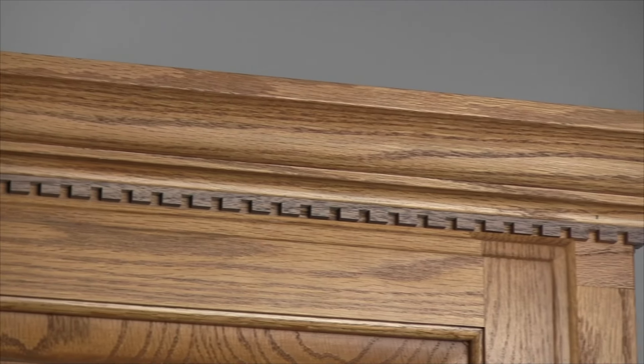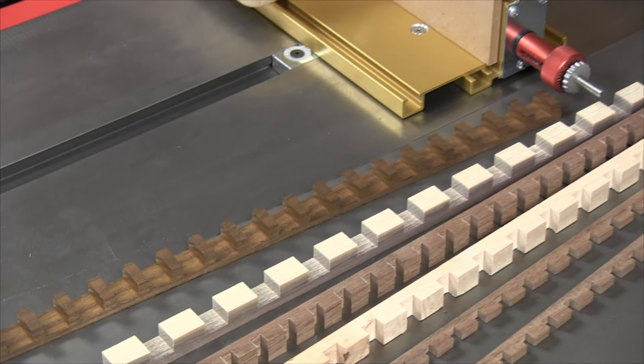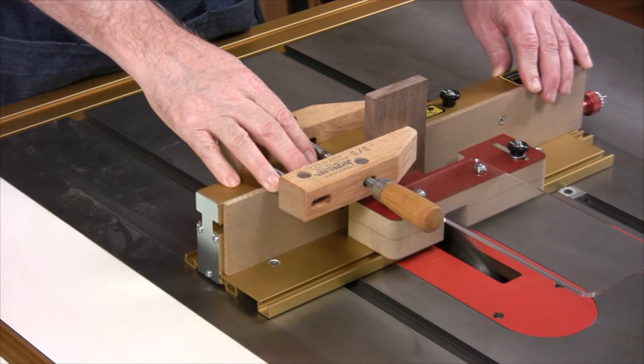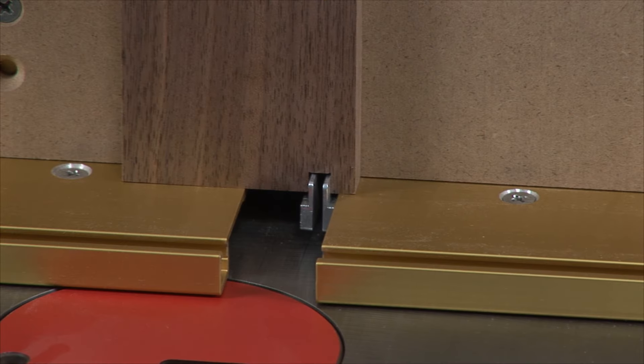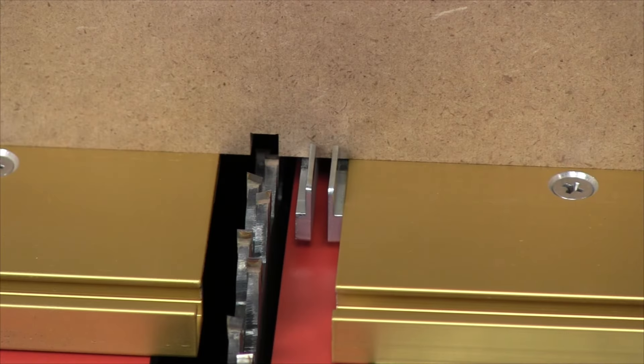Dental molding adds a classical element to your cabinetry and the iBox is the perfect tool for making just about any size imaginable. After setting the desired depth of cut, make a test cut and adjust the pin plates to fit. You can then change the space between cuts by micro-adjusting the pin plate positions.